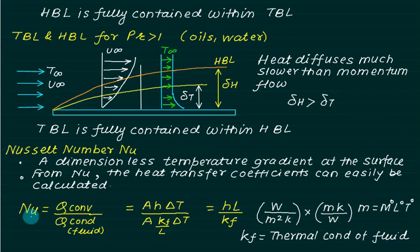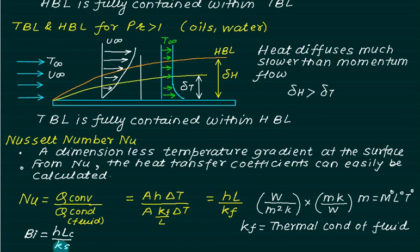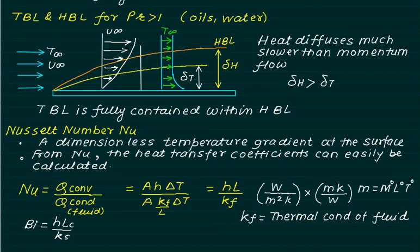The role of the Nusselt number is to identify whether heat is transferred more by conduction or convection. A lower Nusselt number means more heat transfer by conduction; a higher value means more by convection. The Nusselt number is similar to the Biot number used in lumped capacity analysis (hLC/K), but here K is the thermal conductivity of the fluid, whereas in the Biot number K is the thermal conductivity of the solid.